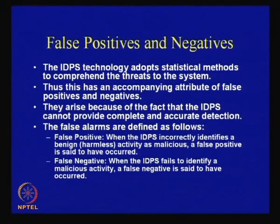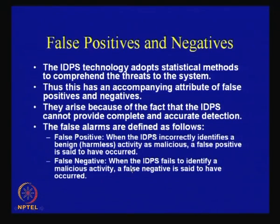Since IDPS technology adopts statistical methods to comprehend threats, it has the accompanying attributes of false positives and false negatives. A false positive indicates when the IDPS incorrectly identifies a supposedly harmless activity as malicious. A false negative is when an IDPS fails to identify a malicious activity — which is probably more threatening. Therefore, the first objective is to prevent or reduce false negatives, and then address any accompanying false positives.